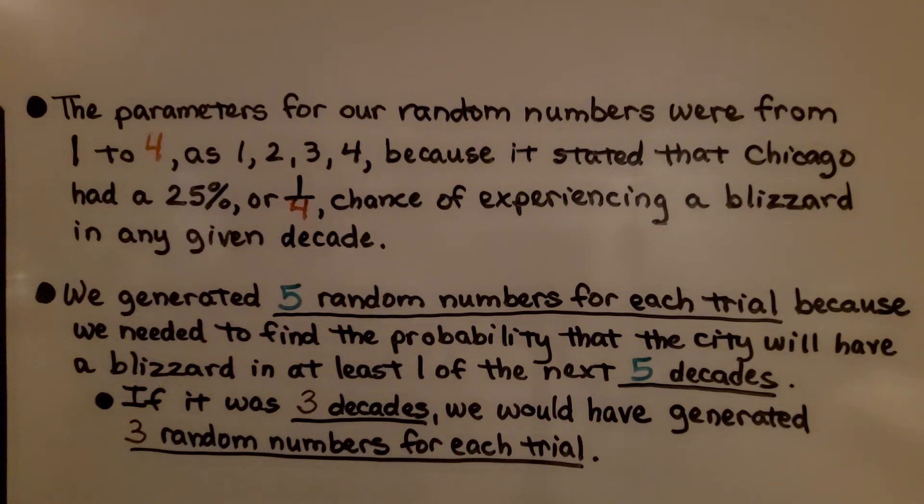We generated five random numbers for each trial because we needed to find the probability that the city will have a blizzard in at least one of the next five decades. If it was three decades, we would have generated three random numbers for each trial.